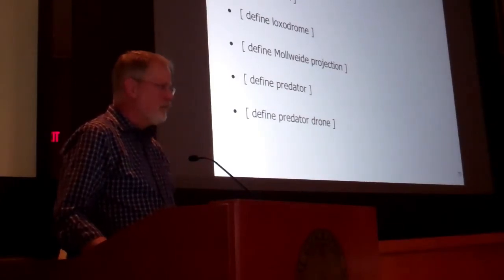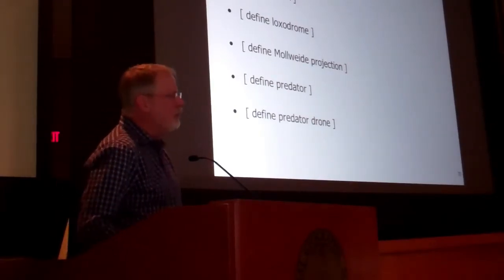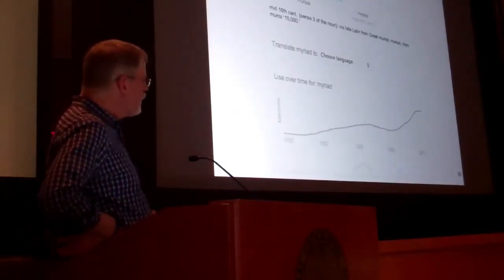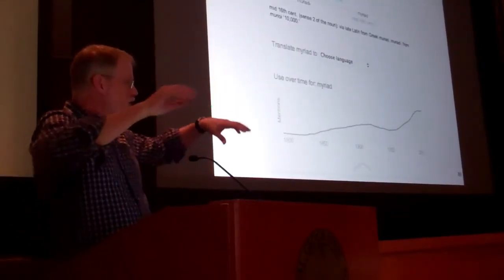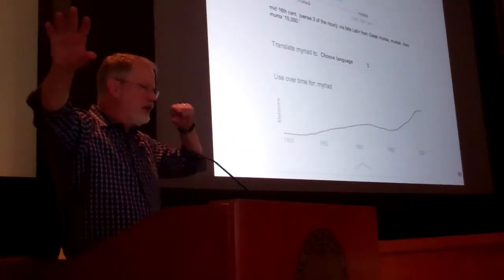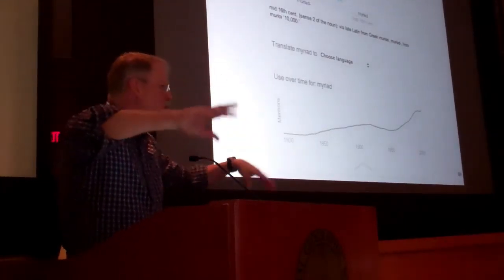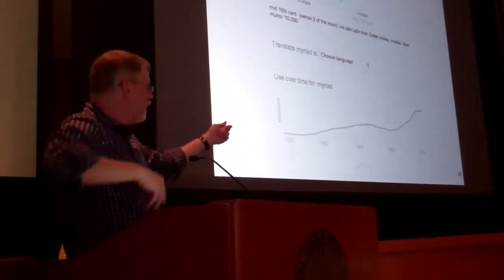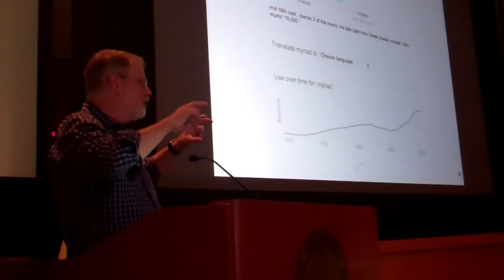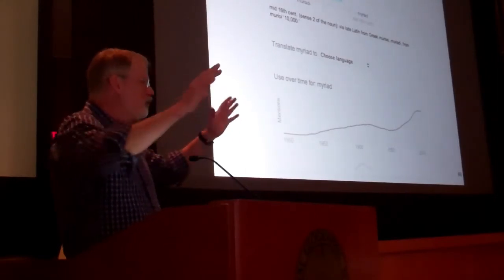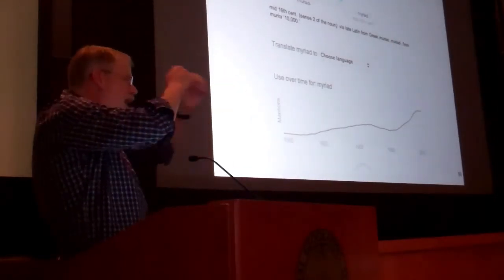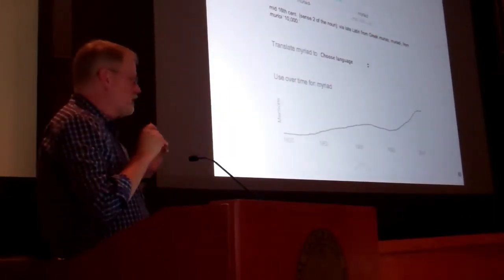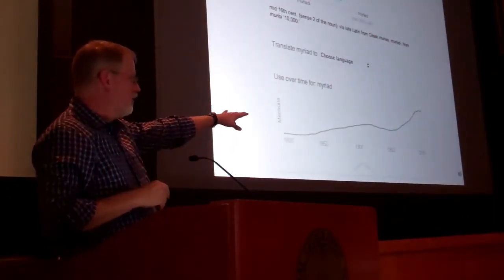Barbara asked where the usage graph comes from. The Google Books project is our scanning project where we've scanned millions of books in multiple languages. This is OCR — optical character recognition — where we've taken all the scans and pulled out the text. We recognize those words, and that's where the usage graph comes from.